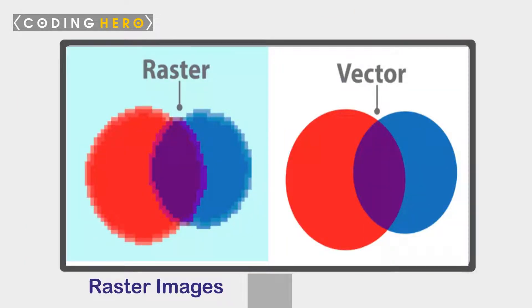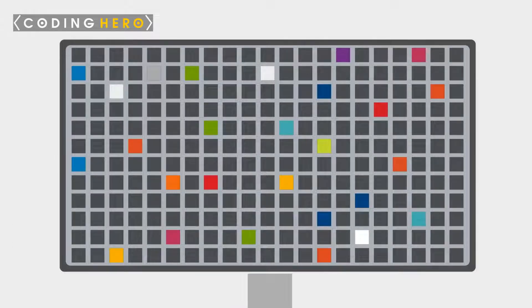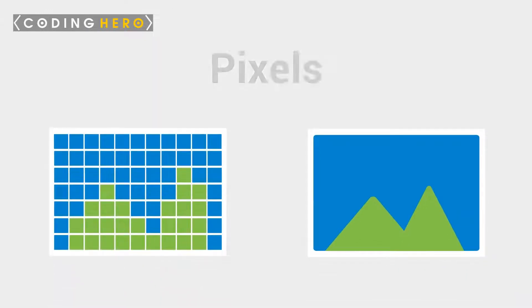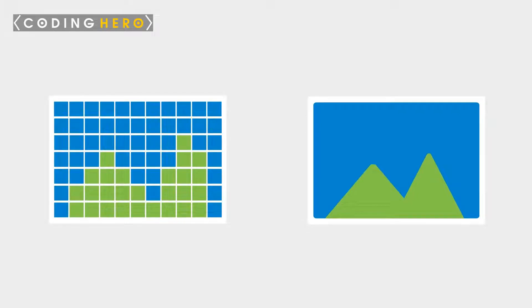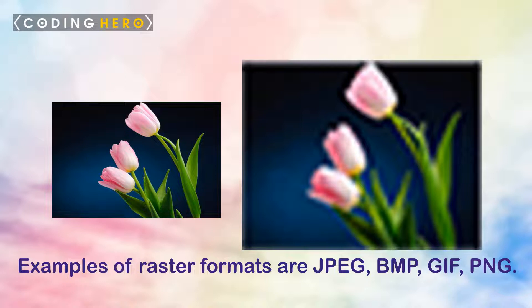Basically, there are two types of images stored and displayed on a computer system. Raster images are made up of individual dots called pixels that are arranged and colored differently to form a pattern. Pixels have a defined proportion based on their resolution, and when the pixels are stretched to fill space they were not originally intended to fit, they become distorted, resulting in a blurry and unclear image. Thus, in order to retain pixel quality, you cannot resize raster images without compromising their resolution. Examples of raster formats are JPEG, BMP, GIF, and PNG.